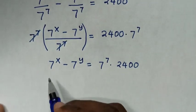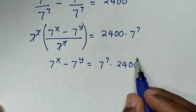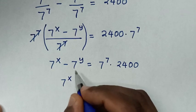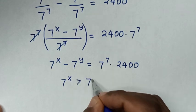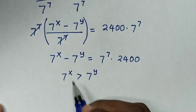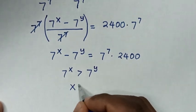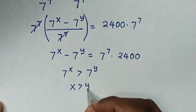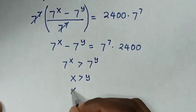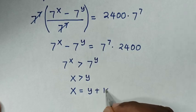Then, from this exponent minus this exponent giving a positive value, therefore 7 power of x is greater than 7 power of y. Now, because we have the same base, we compare these powers. Then it will be x is greater than y.